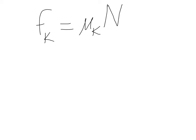Interestingly, sliding friction only depends on the normal force and mu k. It does not depend on the velocity, nor does it depend on the acceleration of the sliding object. If the object is sliding, regardless of its velocity and acceleration — to the extent that acceleration doesn't influence the normal force — sliding friction only depends on the normal force and this coefficient of kinetic friction.